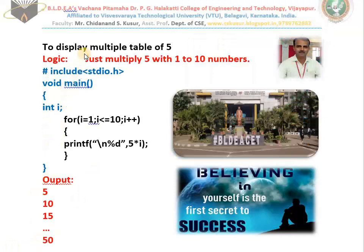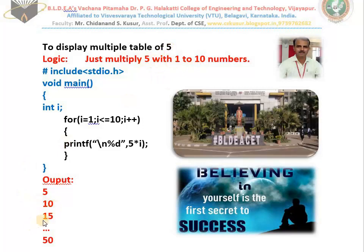The next program is very simple and interesting. Write a C program to display the multiplication table of 5. Multiplication table of 5 means: 5 ones are 5, 5 twos are 10, 5 threes are 15, 5 fours are 20, up to 5 tens are 50. The logic behind this problem is: just multiply the number 5 with 1 to 10 numbers. If you want the multiplication table of 7, multiply 7 with 1 to 10 numbers. That is the logic.